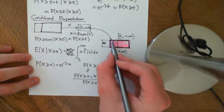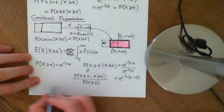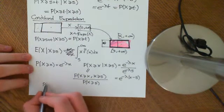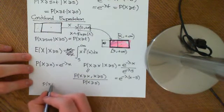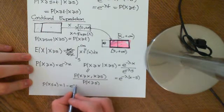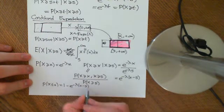So if we want to know the probability of the lower one — the probability that X is less than or equal to x — that's just going to equal 1 minus e to the negative lambda times x minus s.